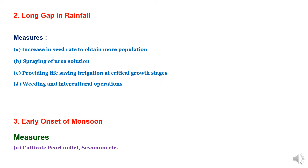The second parameter is long gaps in rainfall. Measures include using higher seed rates to obtain desired plant population even in dry spells, spraying urea solution as nutrient application instead of soil application, provision for life-saving irrigation at critical growth stages when the crop is passing through dry spells and irrigation water is short, and weeding and inter-cultural operations to keep the crop healthy and avoid moisture losses.